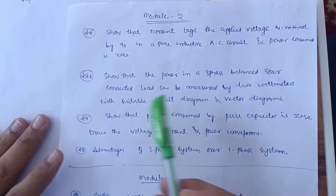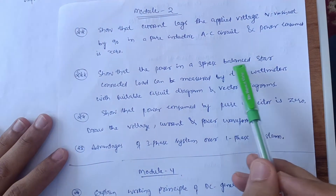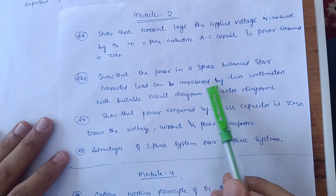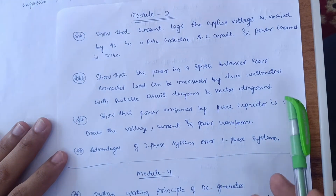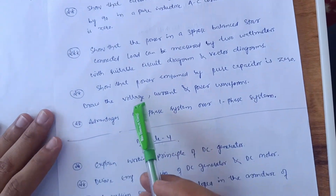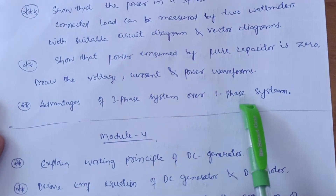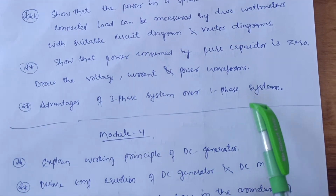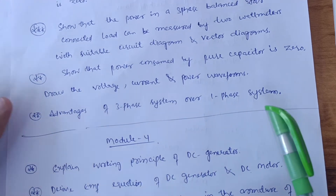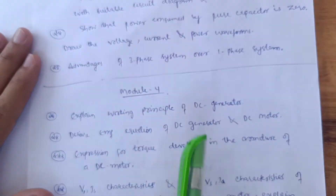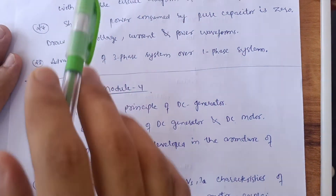Another important question in Module 2 is: show that power in a three-phase balanced star-connected load can be measured by two wattmeters, with a suitable circuit diagram and vector diagram. Also focus on advantages of a three-phase system over a one-phase system. These four questions are enough for Module 2, and you can easily score around 10 marks from this module.